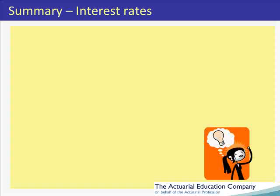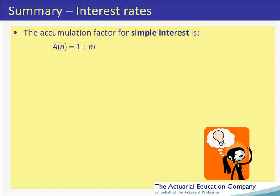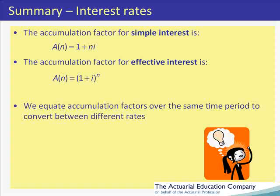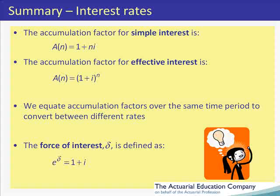In summary: for simple interest the accumulation factor is 1 + n·i; for effective or compound interest the accumulation factor is (1 + i)^n. To convert between interest rates we equate the accumulation factors over the same time period. Finally, we define the force of interest δ via e^δ = 1 + i.